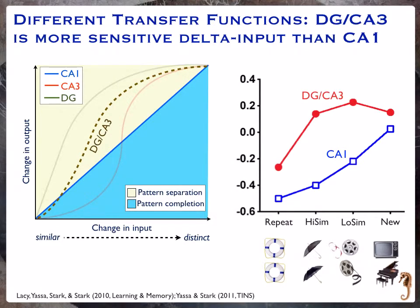In fact, in the study by Joyce Lacey, we had stimuli known ahead of time to have either no change in input — exact repetitions — a small change in input like those umbrellas, a larger change like those movie reels, or two totally different pictures. We traced out and showed that CA1 tracks very cleanly the change in input in a nearly linear way, whereas even tiny changes like those two different umbrellas caused the dentate/CA3 to treat the stimulus as if it were entirely new — very consistent with pattern separation.